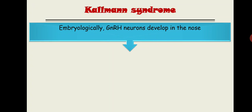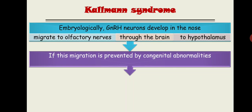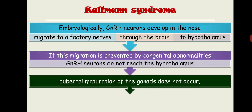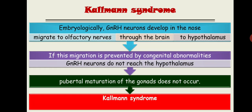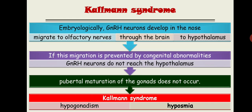When writing about Kallmann syndrome in an exam: embryologically, GnRH neurons develop in the nose and migrate via the olfactory nerve through the brain to the hypothalamus. If migration is prevented by congenital abnormalities, GnRH neurons do not reach the hypothalamus and pubertal maturation of the gonads does not take place due to absence of FSH and LH — this is Kallmann syndrome. Two features: hypogonadism, and hyposmia or microsmia (reduced ability to smell and detect odor).